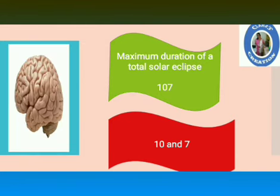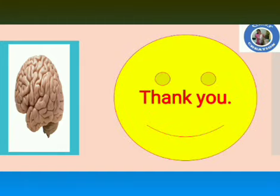Maximum duration of a total solar eclipse: 107 minutes. Break it into 10 and 7, and you get the answer — 107. Thank you, I hope you enjoyed it.